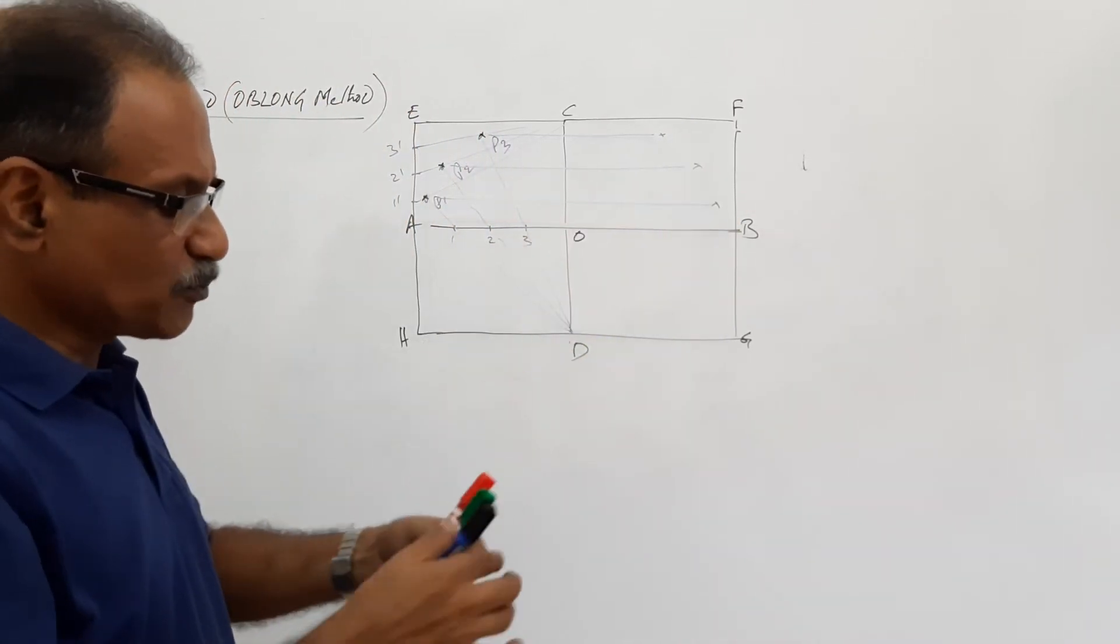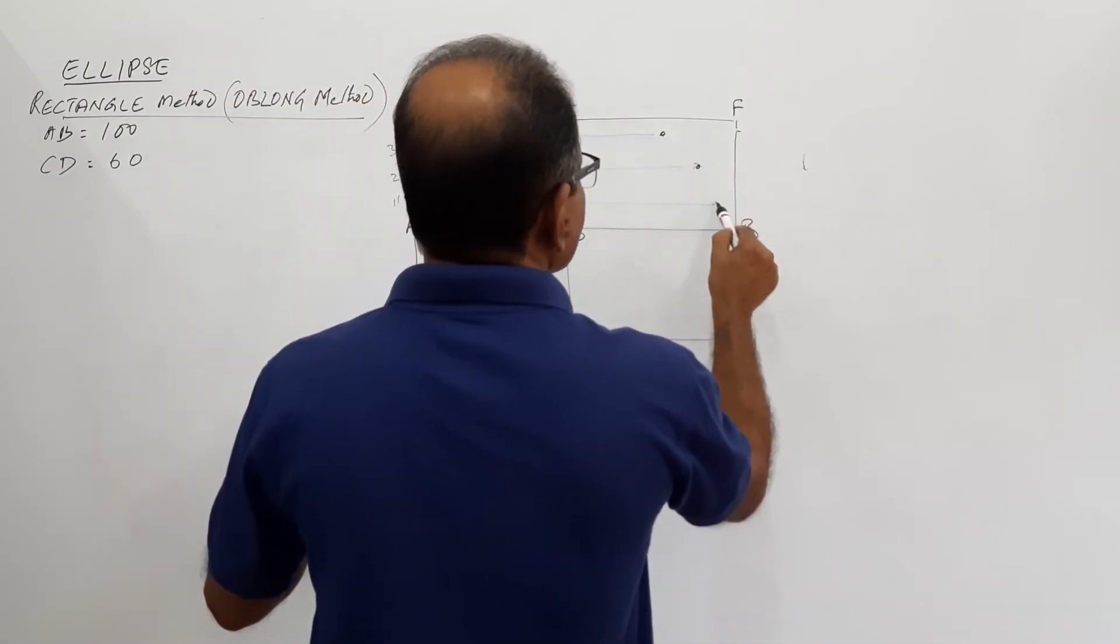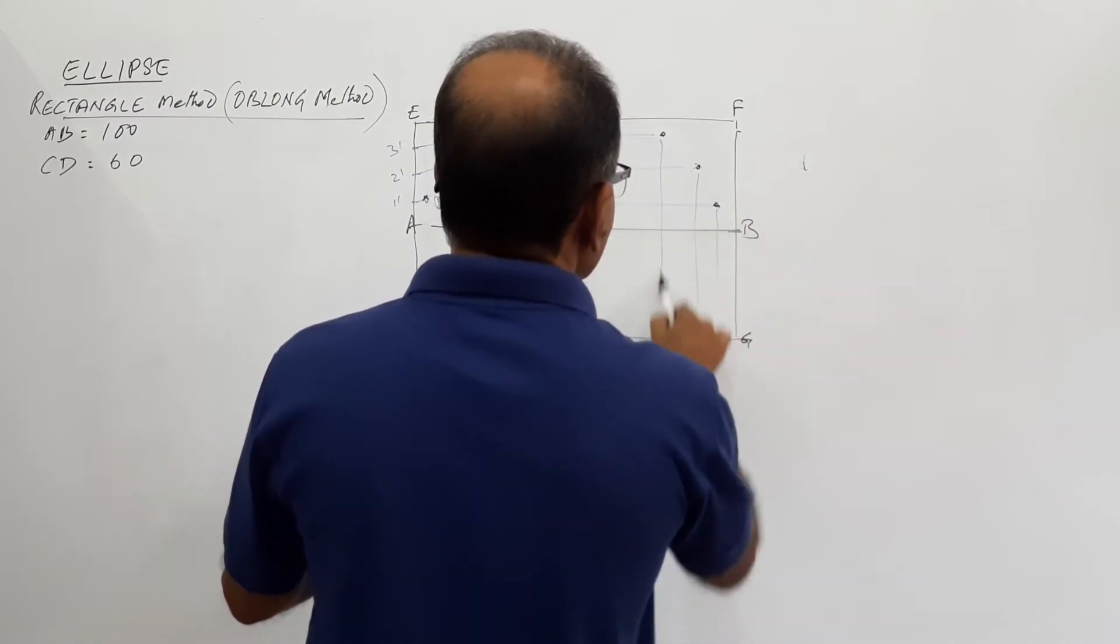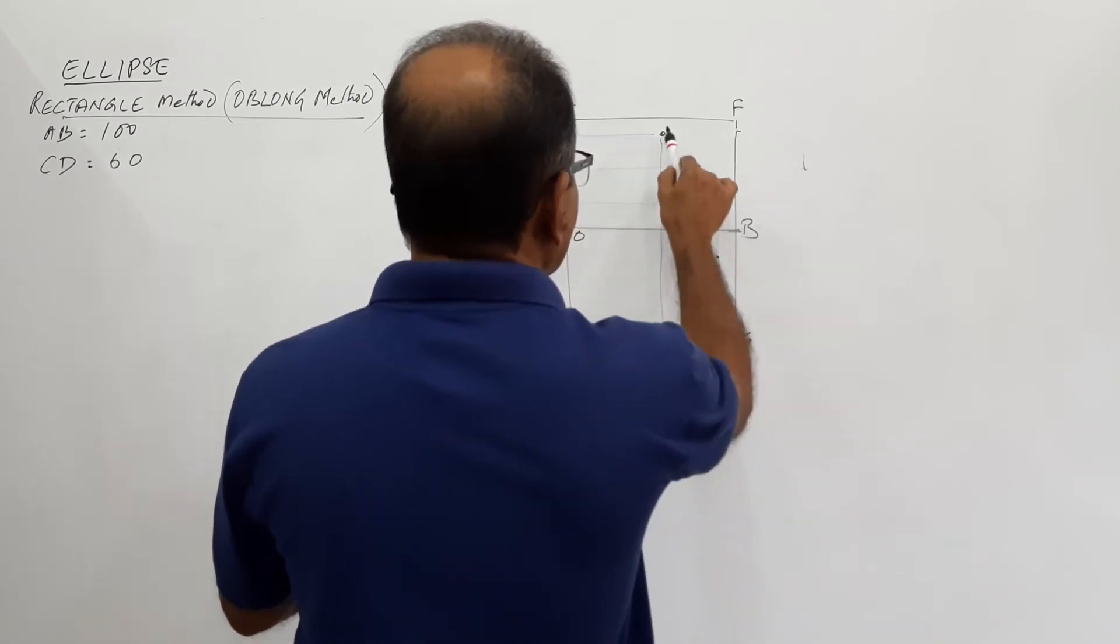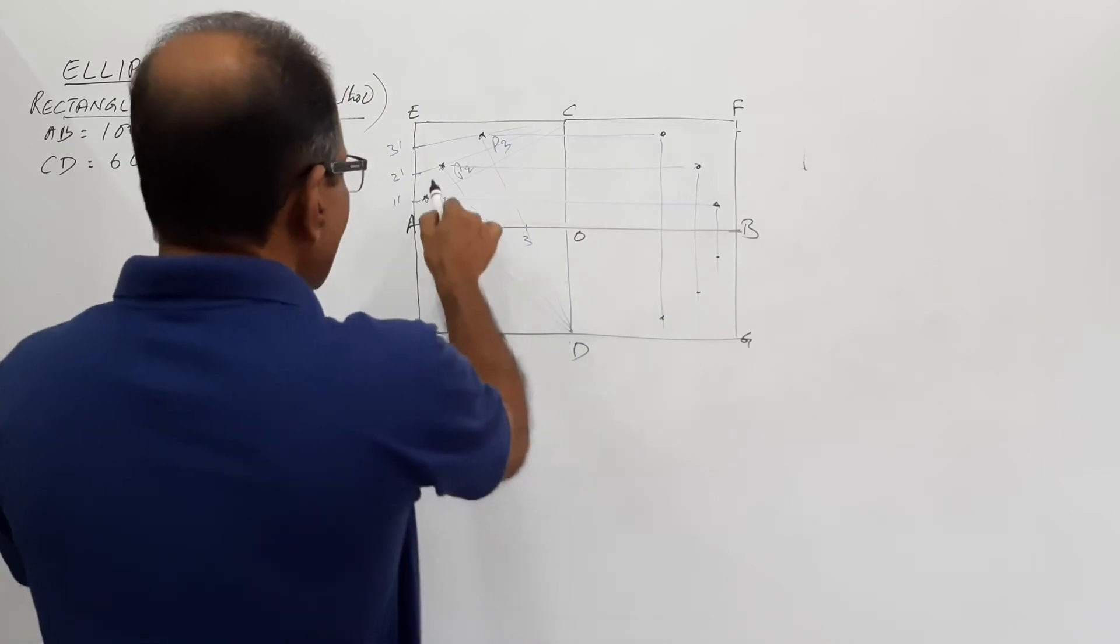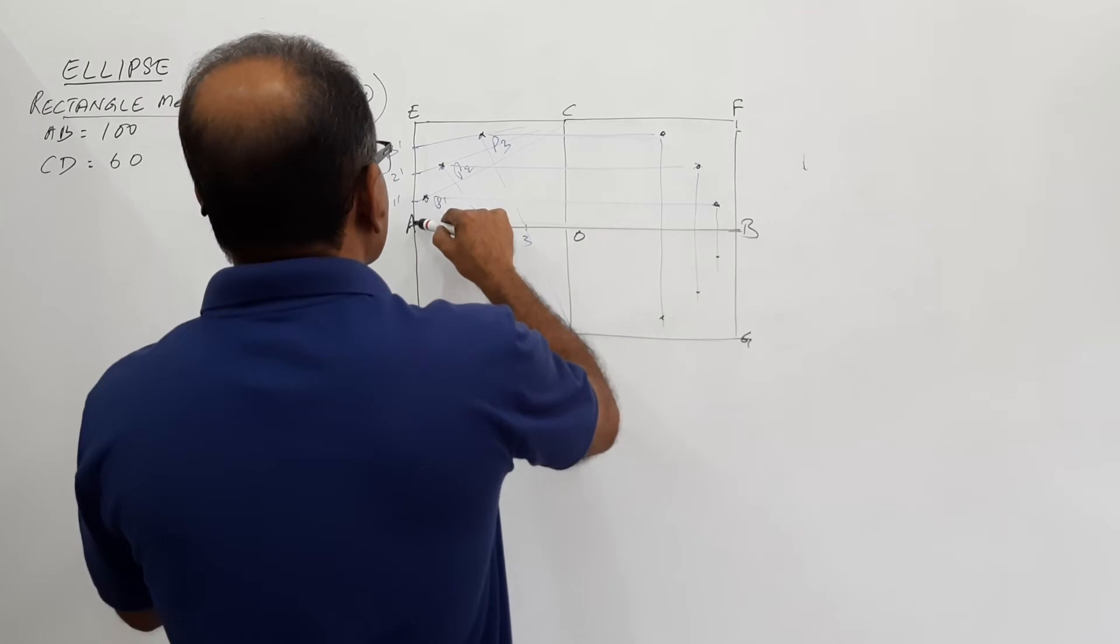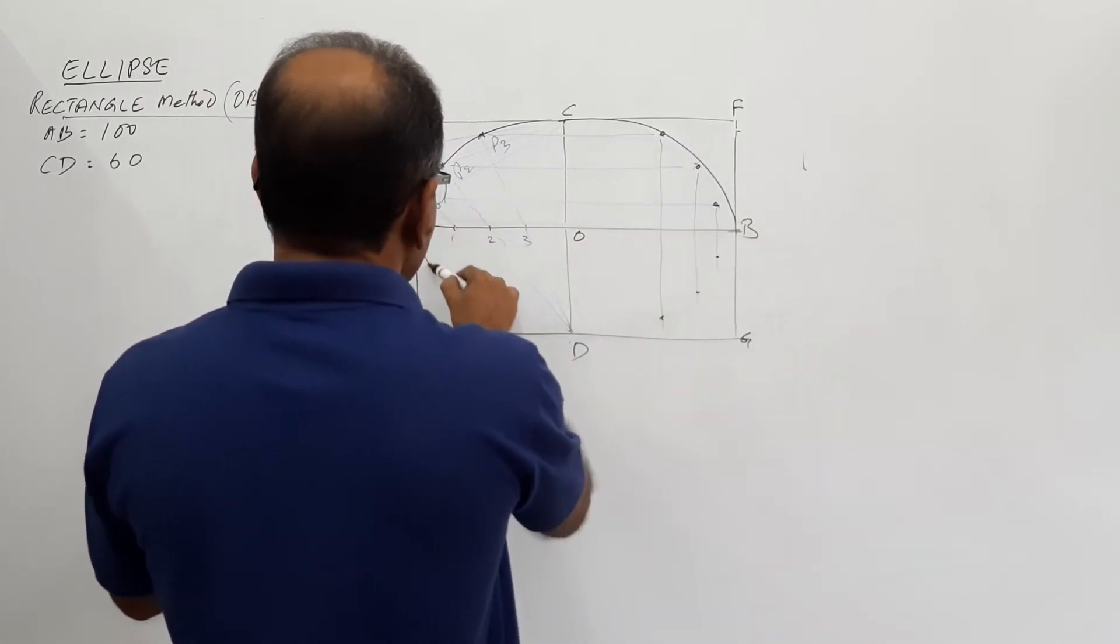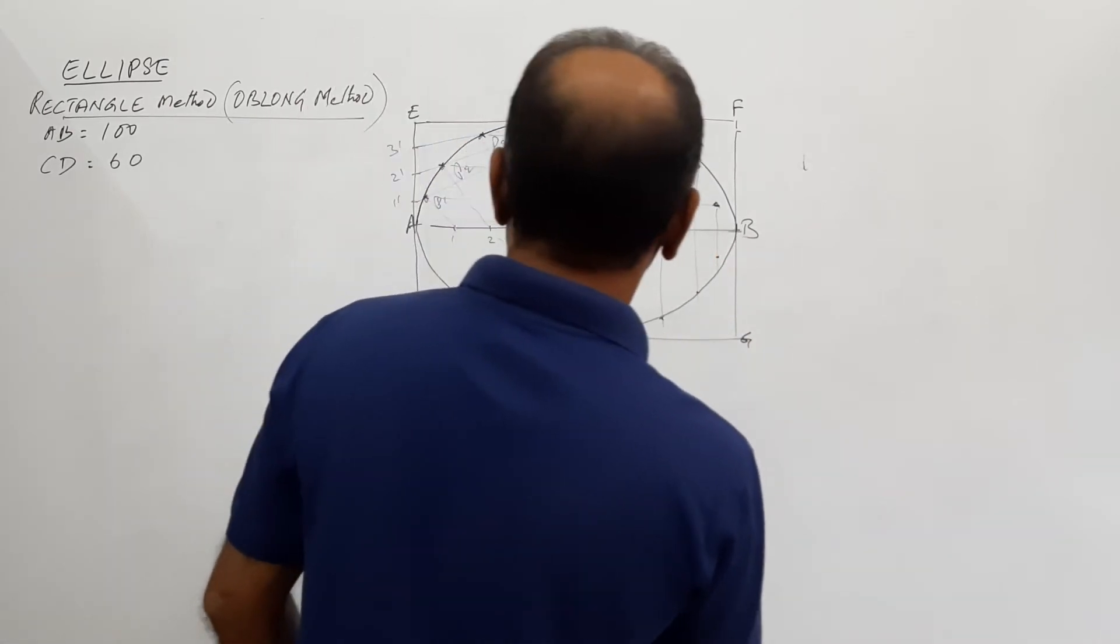You get the point there. Take this distance and mark here. You get the point there. Take the distance and mark here. You get the point there. Either come down or come here in this direction. Connect all these points by a smooth curve.